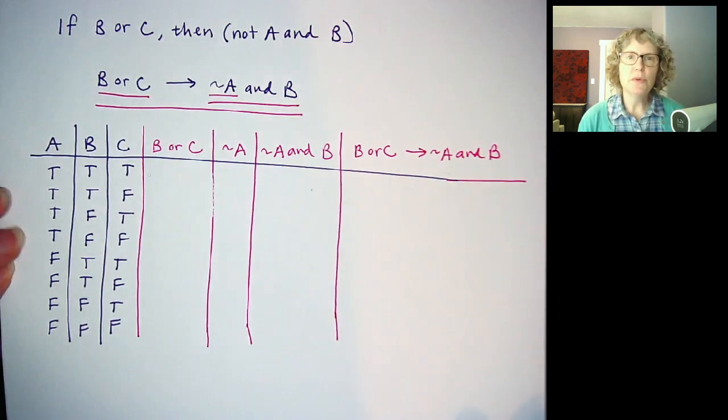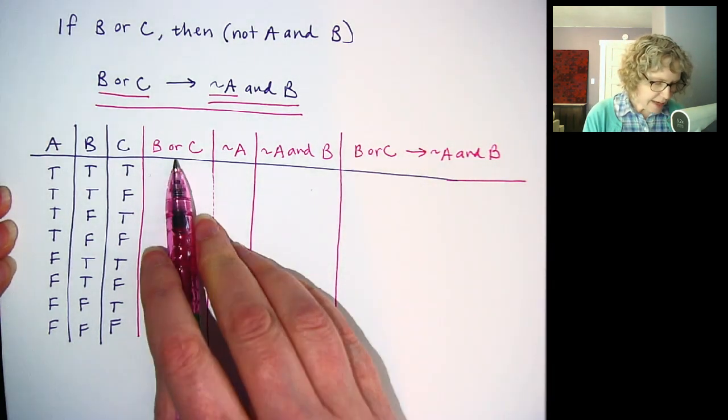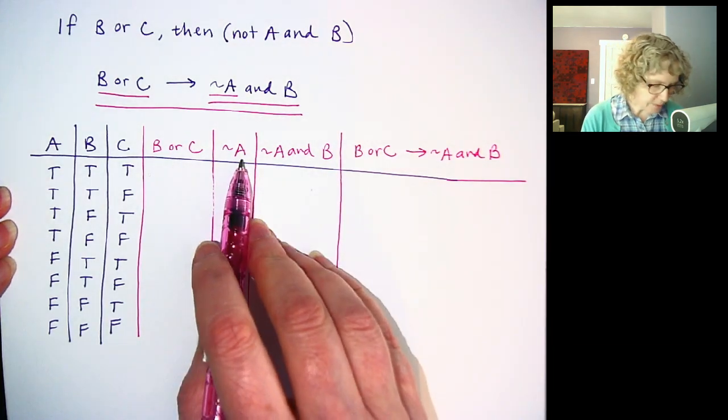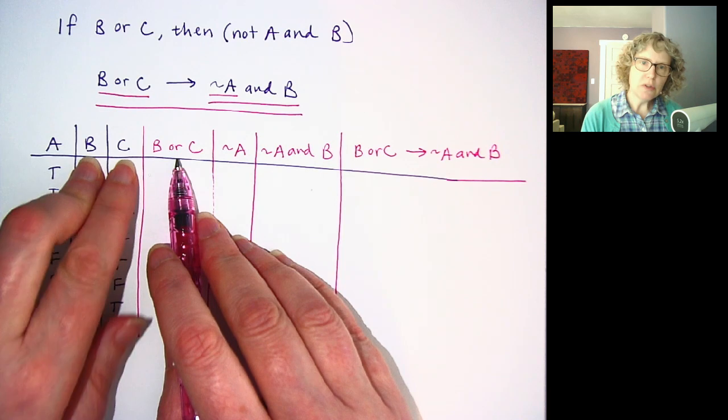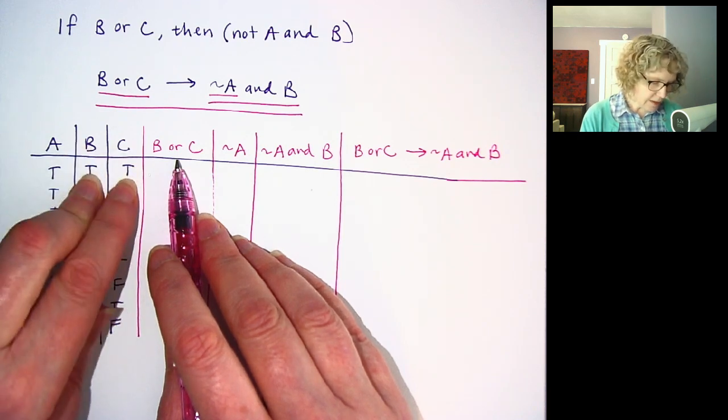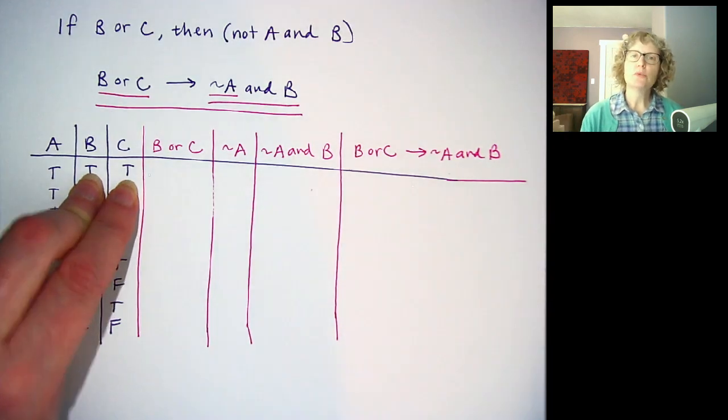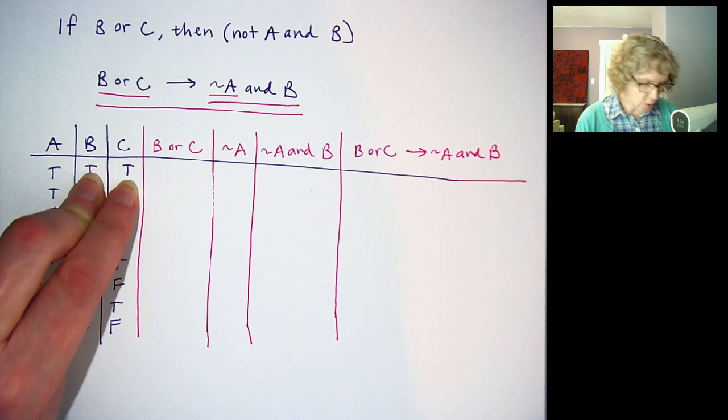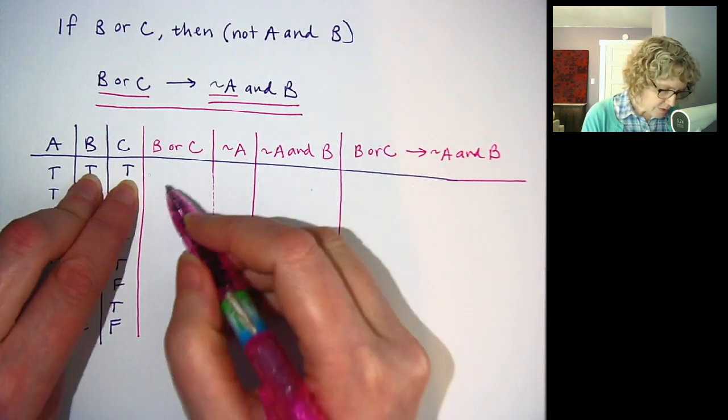Okay, so let's go through these columns one at a time. The beauty of this is now I only have to look at two columns at a time, or maybe even just one column. So B or C, I'm only going to look at the columns B and C, and then I'm going to think of what does or mean. Or means one or the other, or both. Okay, we use the inclusive or in most math cases.